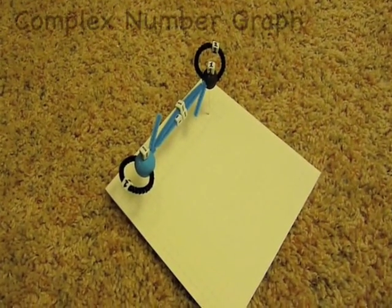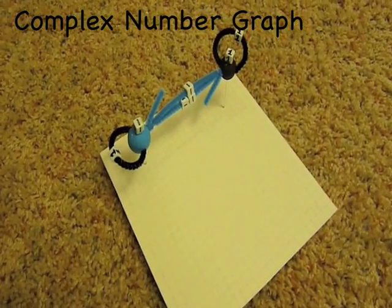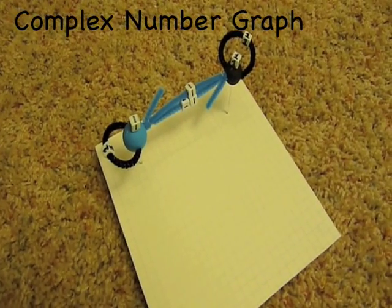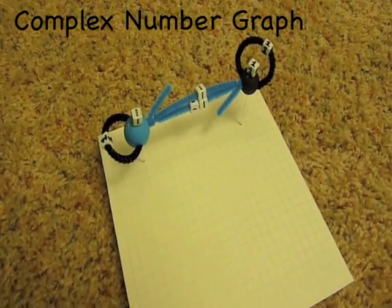Here is the graph for complex numbers. The real number 1 with its loop is already there. Now we have a new vertex, the imaginary number i in blue.